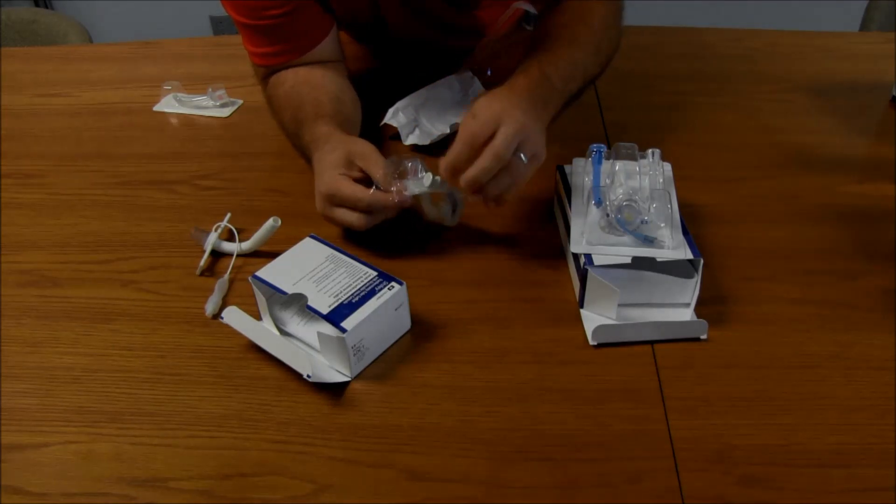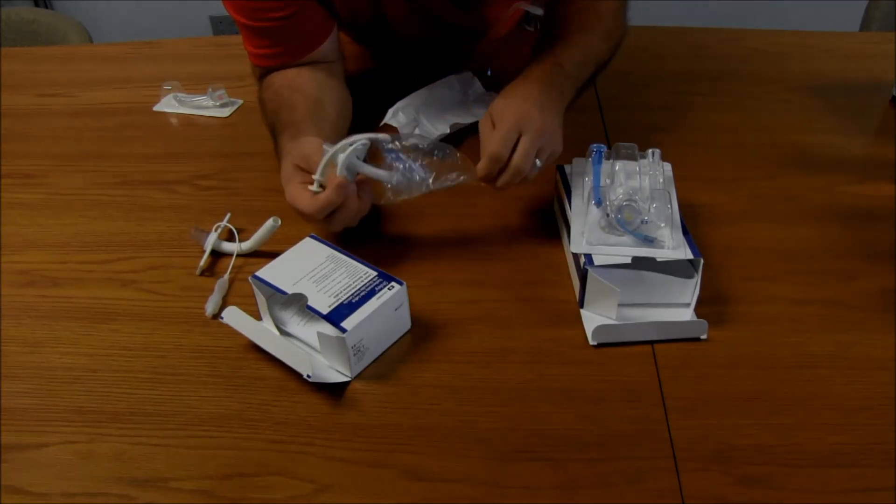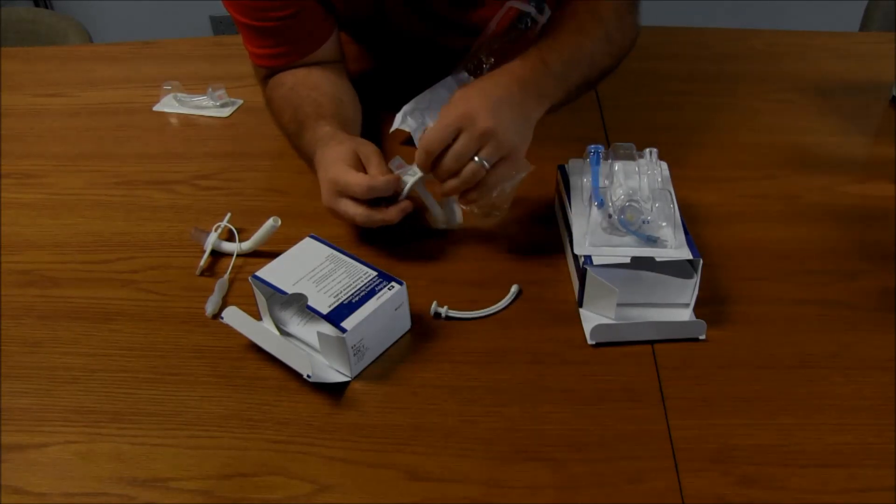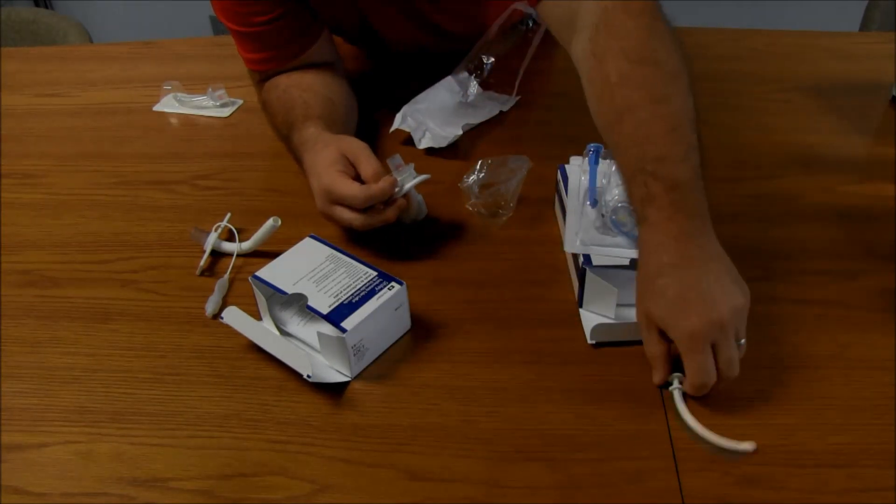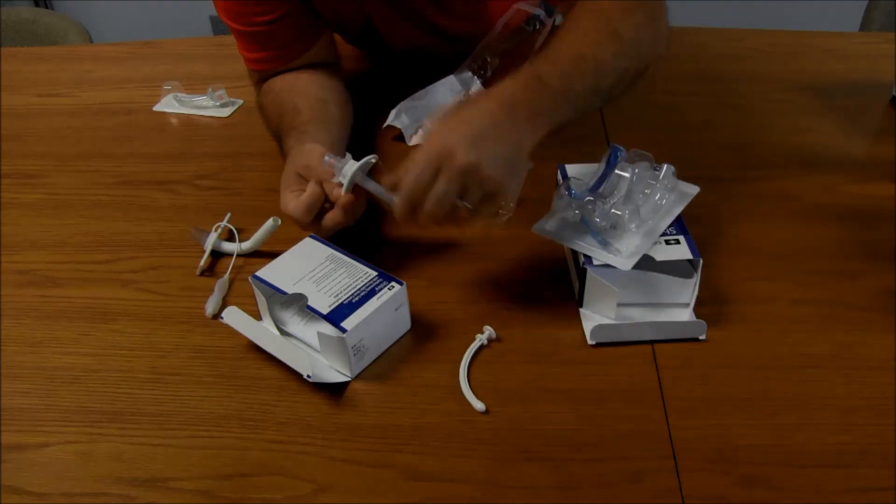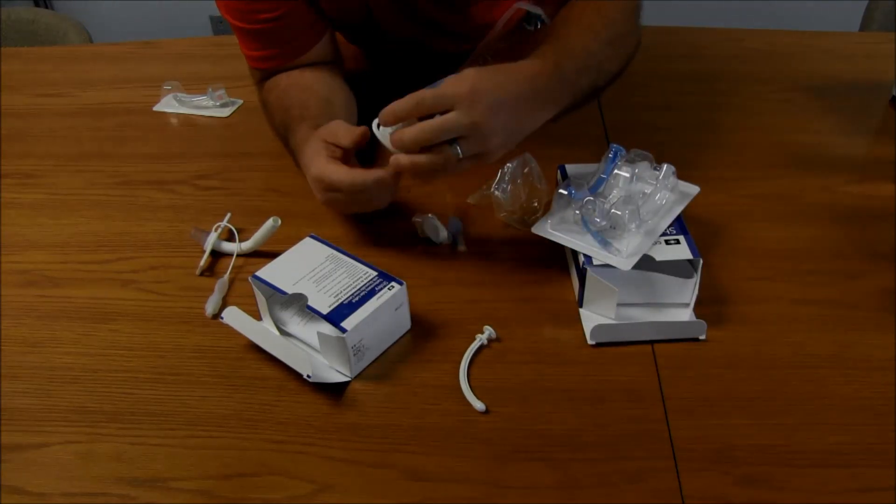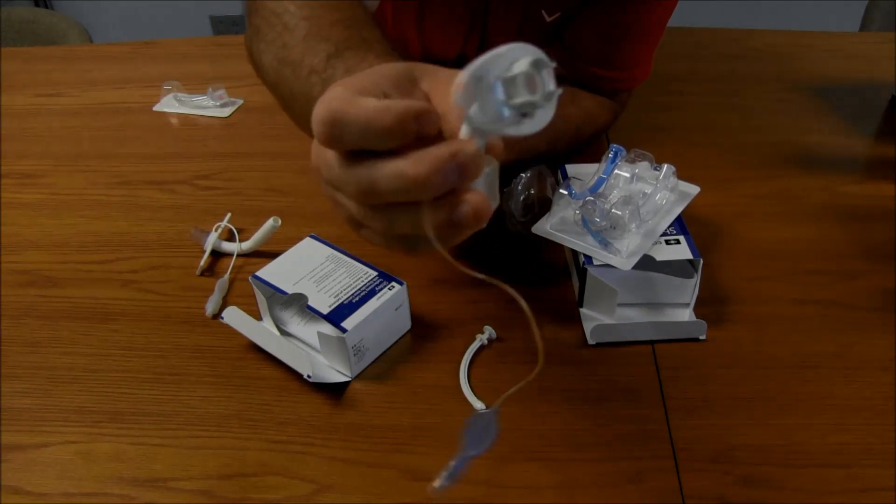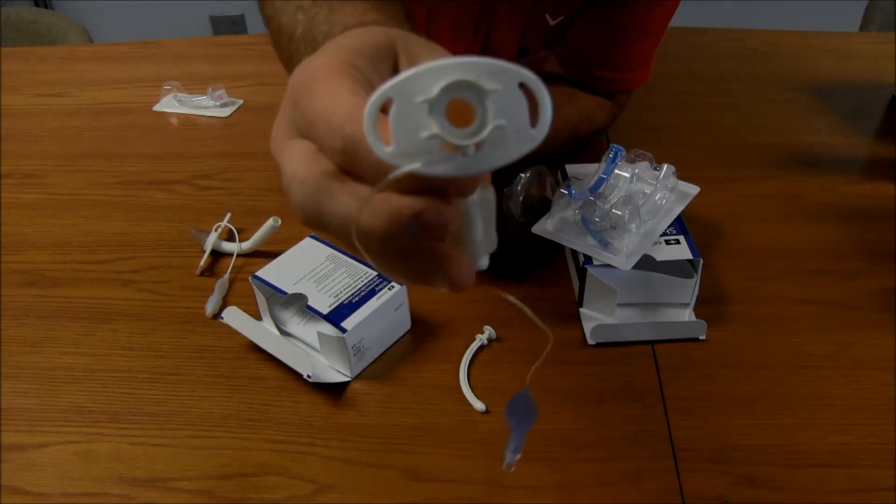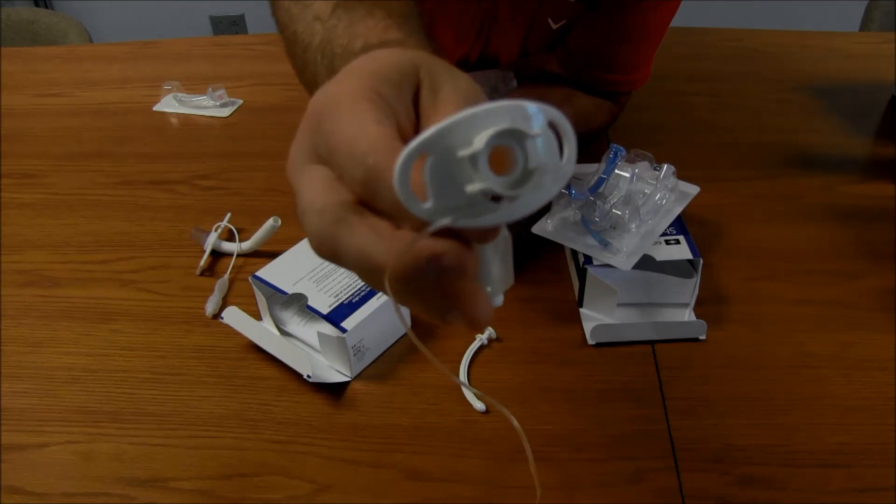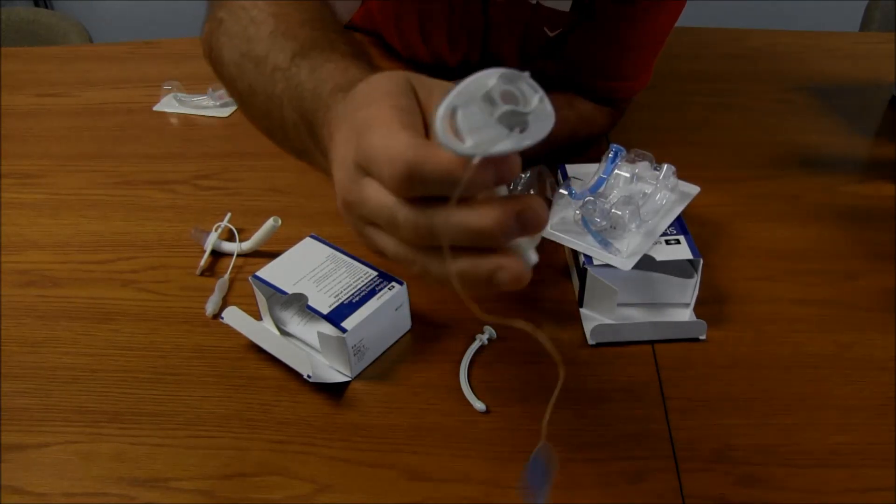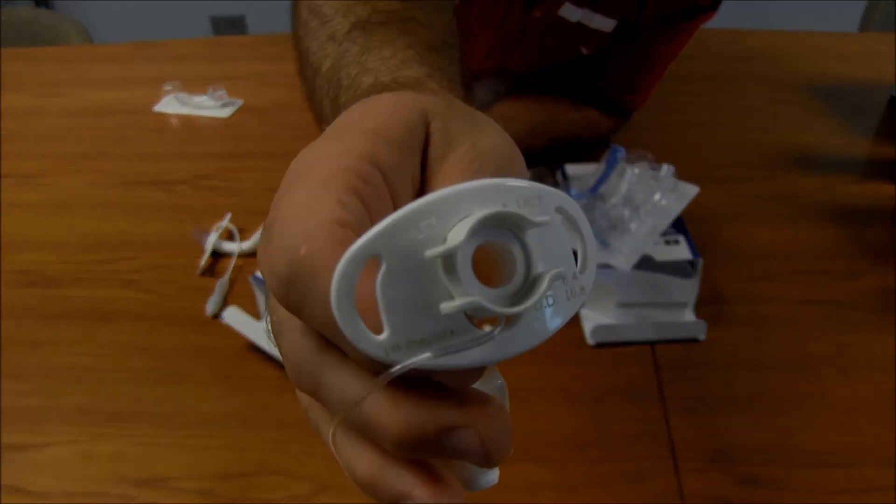They come with the same equipment each time. So, we have our introducer. We have our tracheostomy. As you can see there, 6 DCT. And that inner diameter is 6.4. Outer diameter, a 10.8. That's really important to look at. When you're looking at these trachs, what the outer diameter is.